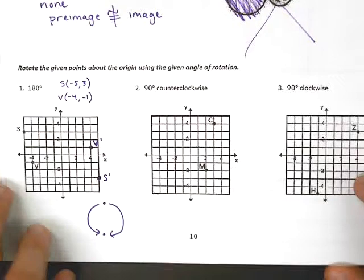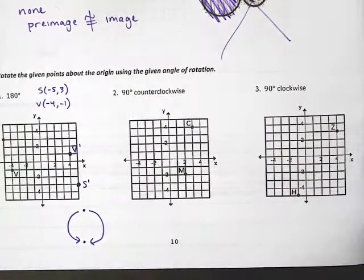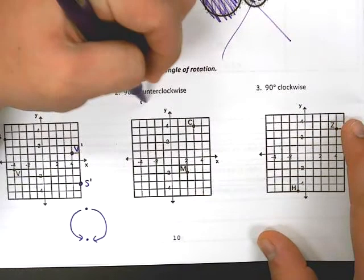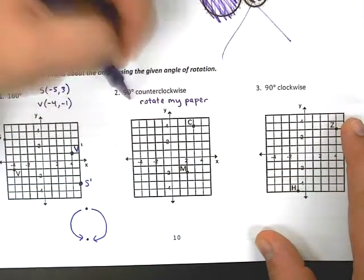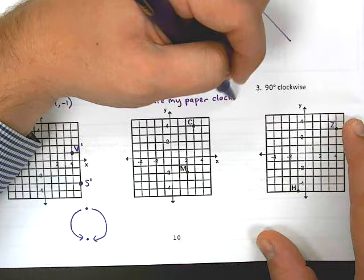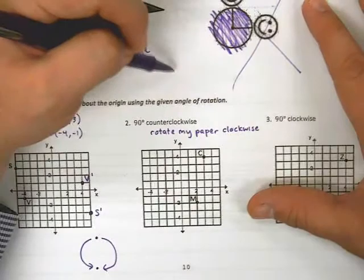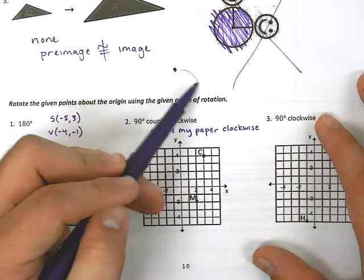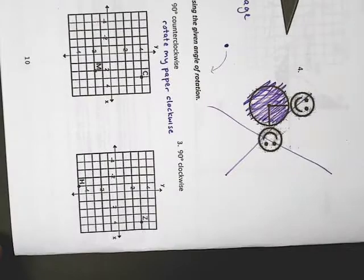Now, this is where, for 2 and 3, this is where it can get a little bit confusing. Because I want to rotate 90 degrees counterclockwise, I actually need to rotate my paper the opposite of what it says. So, I need to rotate clockwise. So, again, if it helps, maybe put a dot on your paper, and understand that clockwise means going like this. So, I need to turn my paper 90 degrees to the right, like a clock would go.